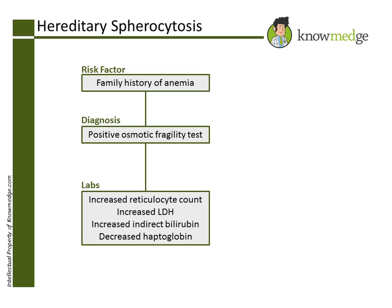Choice A, a glutamate-to-valine point mutation, would be seen in sickle cell problems. Choice B, an enzyme deficiency, is exemplified by G6PD deficiency. This patient does not have any exposure to certain medications or foods like primaquine, fava beans, dapsone, trimethoprim-sulfamethoxazole, or quinine to suggest this disorder.